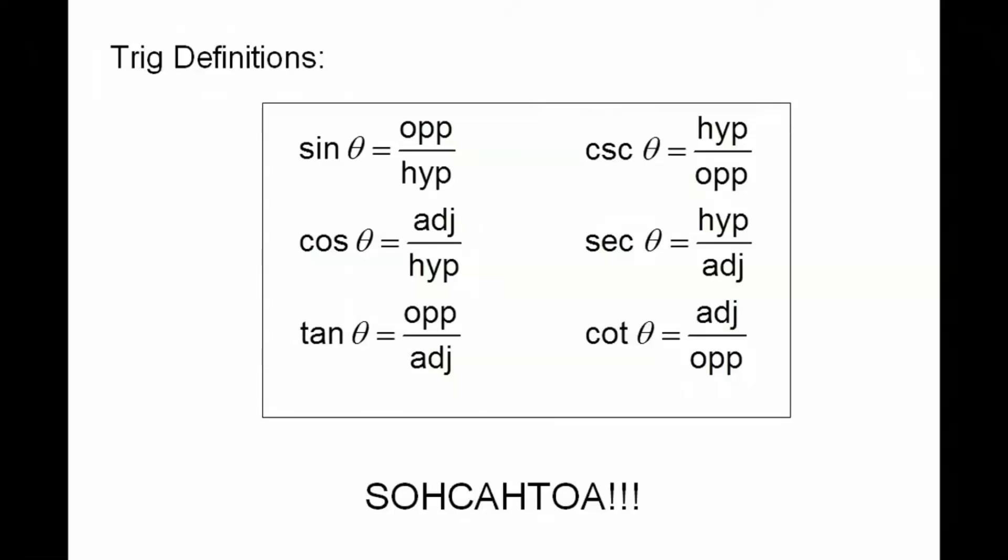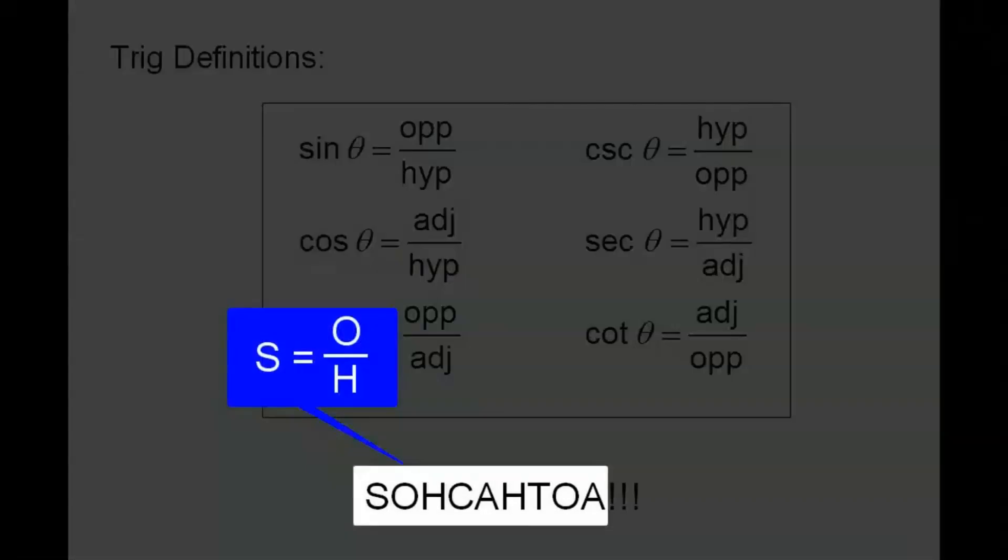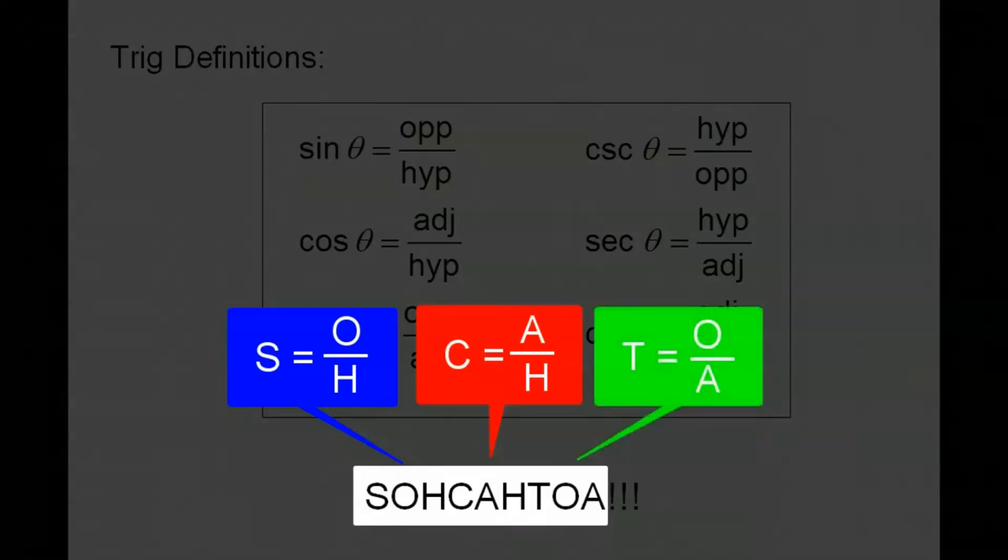If you remember the word SOHCAHTOA, it will help you remember the definitions of sine, cosine, and tangent as referring to a right triangle. SOH stands for sine equals opposite over hypotenuse, then I have cosine equals adjacent over hypotenuse, and tangent equals opposite over adjacent.